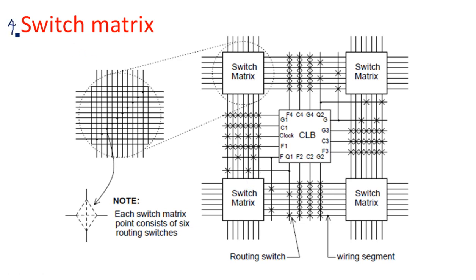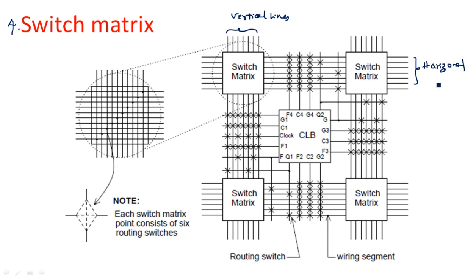The fourth important element is the switch matrix. Its purpose is to connect the horizontal and vertical lines. All vertical lines are the vertical interconnecting lines, and all horizontal lines are the horizontal interconnecting wires. The data between these horizontal and vertical interconnecting wires can be connected or disconnected based on the switch matrix.